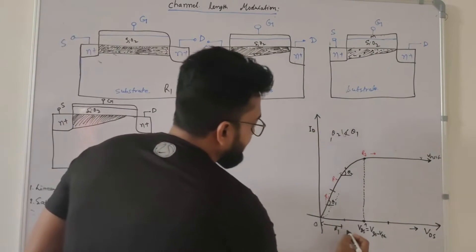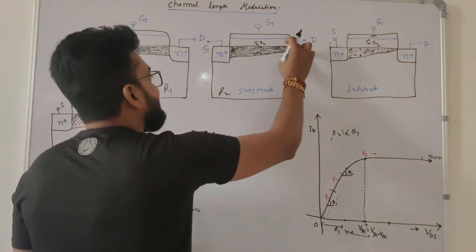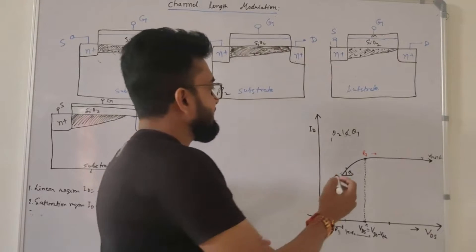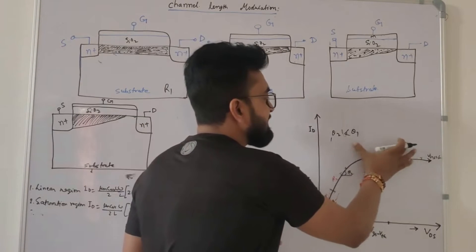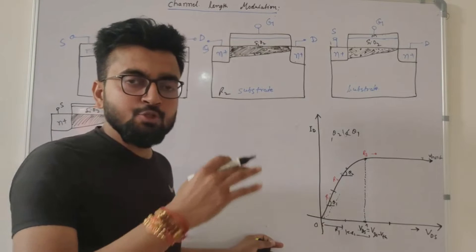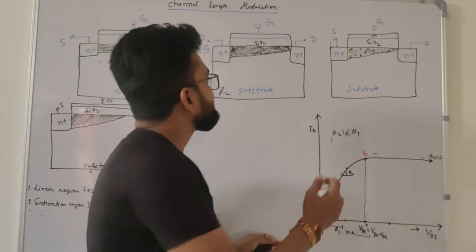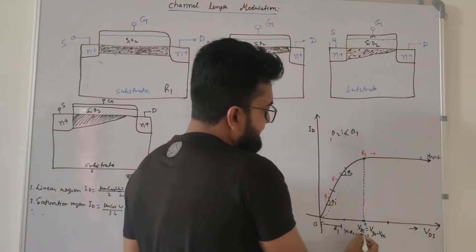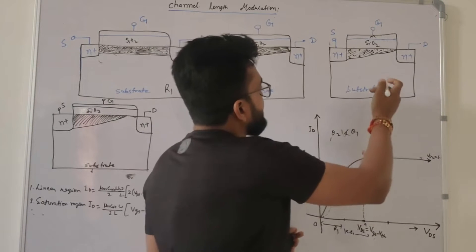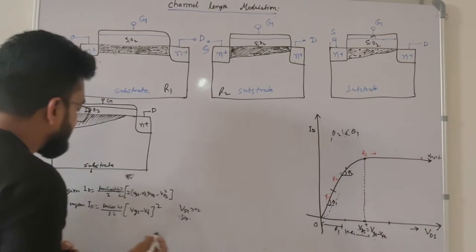In Region 2, as VDS is further increased with a constant VGS, the thickness of the channel near the drain is reduced. In Region 3, at the pinch-off point when VDS equals the overdrive voltage (VGS minus VT), we expect the MOSFET to deliver a constant current — to work as a constant current source.